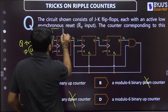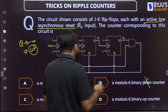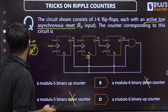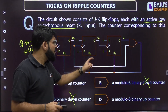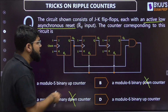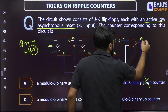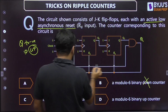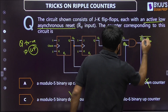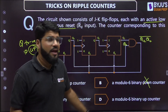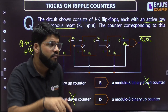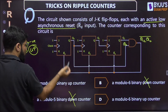Now we need to determine whether it is modulo 5 or modulo 6. With three flip-flops it would normally be modulo 8, but there is a reset pin. This is an active low asynchronous reset pin, represented by a bubble or 'reset-bar' symbol. Active low means: when you send a low signal, the flip-flop resets. The signal is derived from the output of a NAND gate with inputs Q2 and Q0.